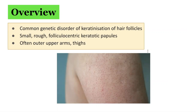Keratosis pilaris first appears in early childhood and often progresses, becoming more extensive during the second decade of life. It is characterized by small, rough, folliculocentric keratotic papules, as seen here in this image.